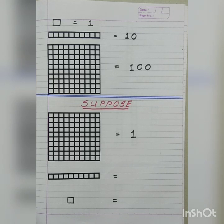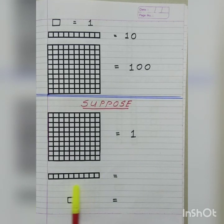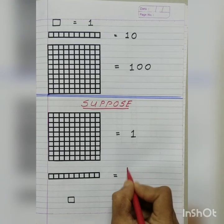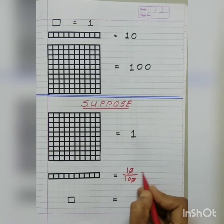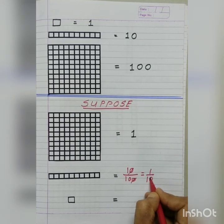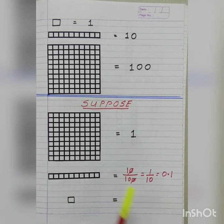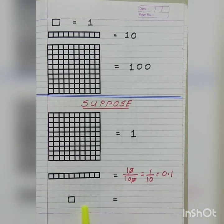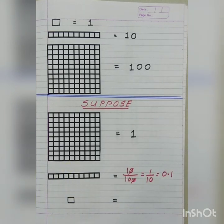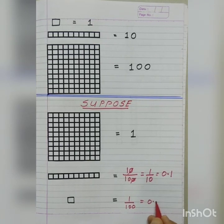Let us change the value of these blocks to understand our decimals more clearly. Let us suppose a grid of 100 boxes is equal to 1. Then, a grid of 10 boxes can be written as 10 upon 100. By cancelling zeros, we get 1 upon 10, which is 0.1. So, now our grid of 10 boxes is equal to 0.1. Now, let us take a single box, which can be written as 1 box out of 100, so 1 upon 100, which is equal to 0.01.